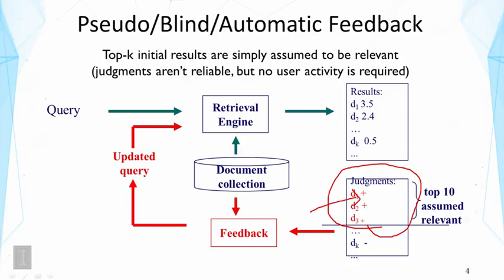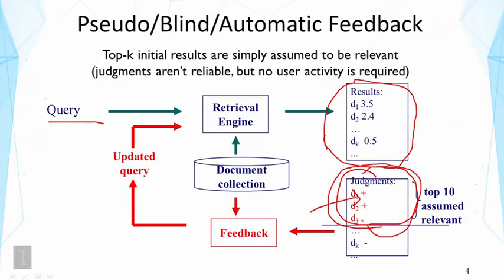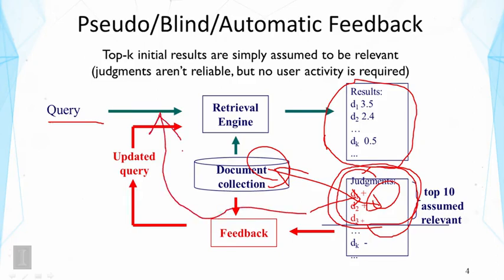We first use 'computer' to retrieve all the documents that contain 'computer'. The results will be those documents, and we take the top results that match 'computer' very well. We count the terms in this set and use the background language model to choose terms that are frequent in this set but not frequent in the whole collection. By making this contrast, we can learn related terms to the word 'computer', as we've seen before. These related words can then be added to the original query to expand it, helping us retrieve documents that don't necessarily match 'computer' but match other words like 'program' and 'software'. This is effective for improving search results.